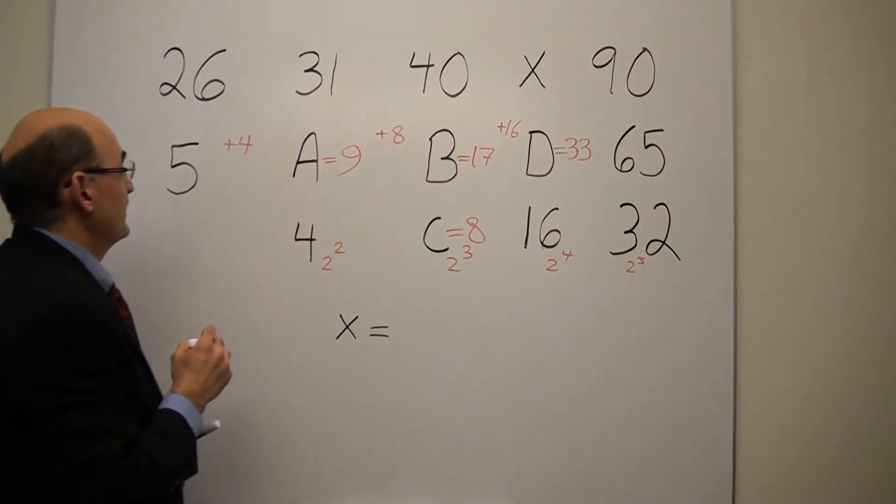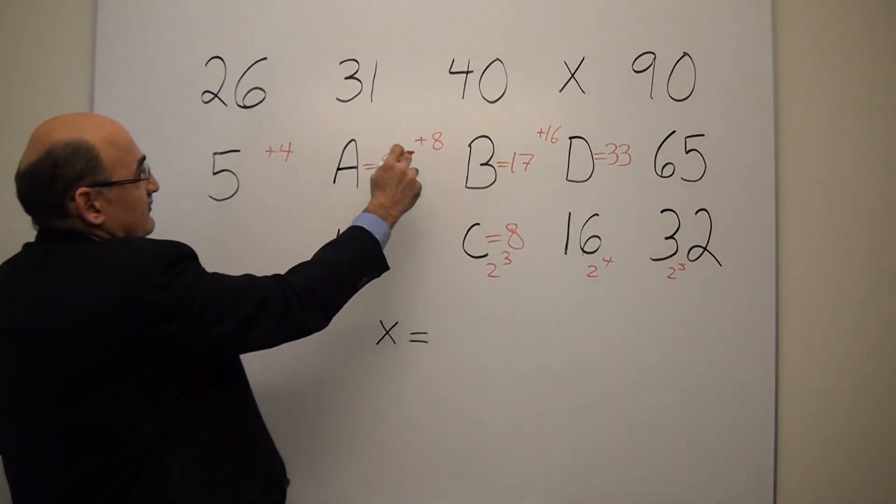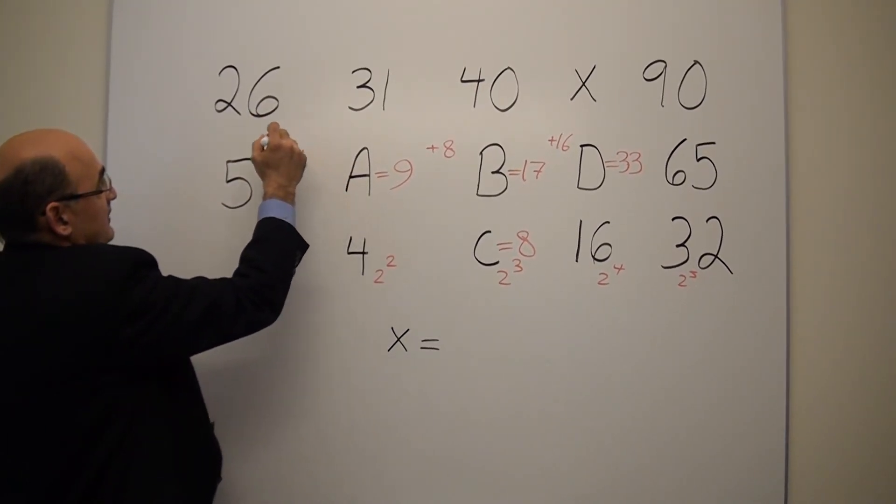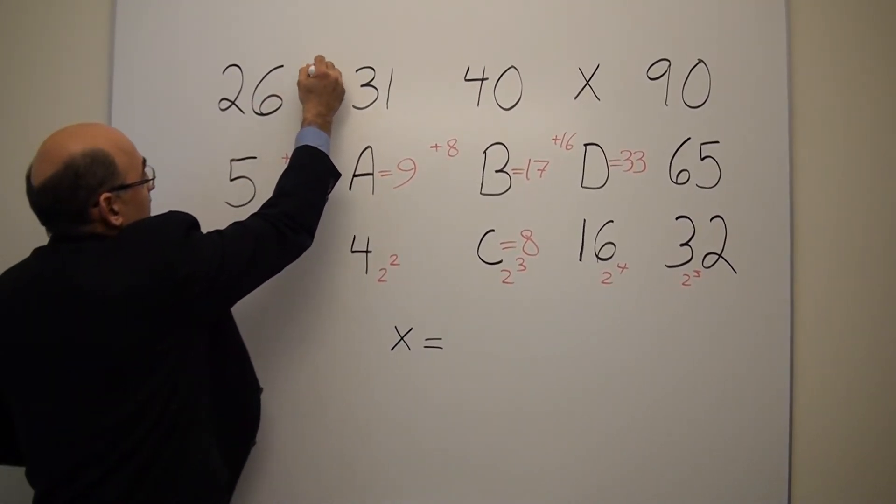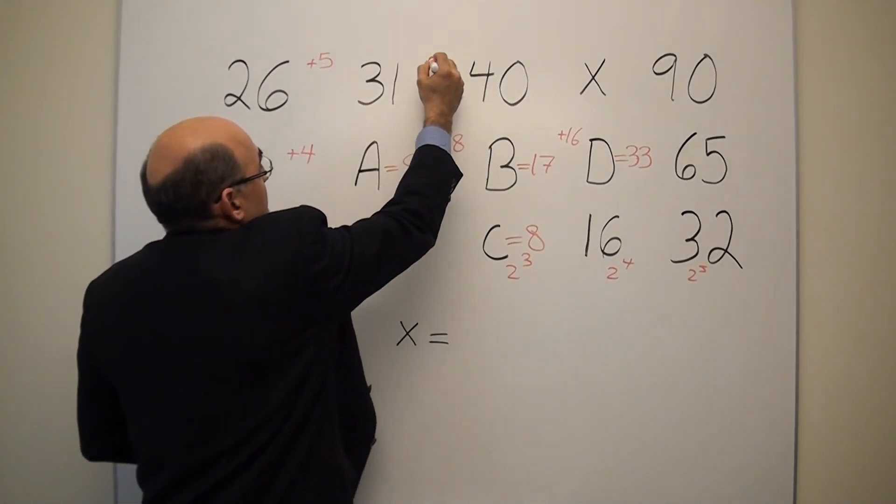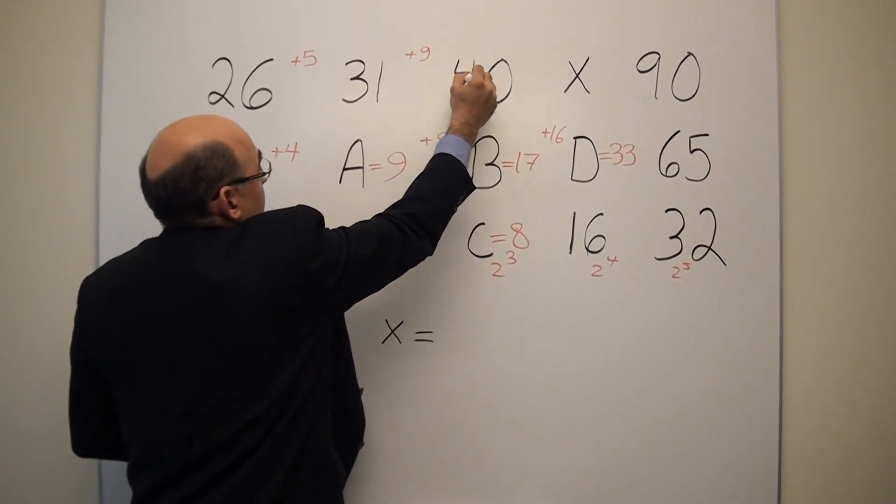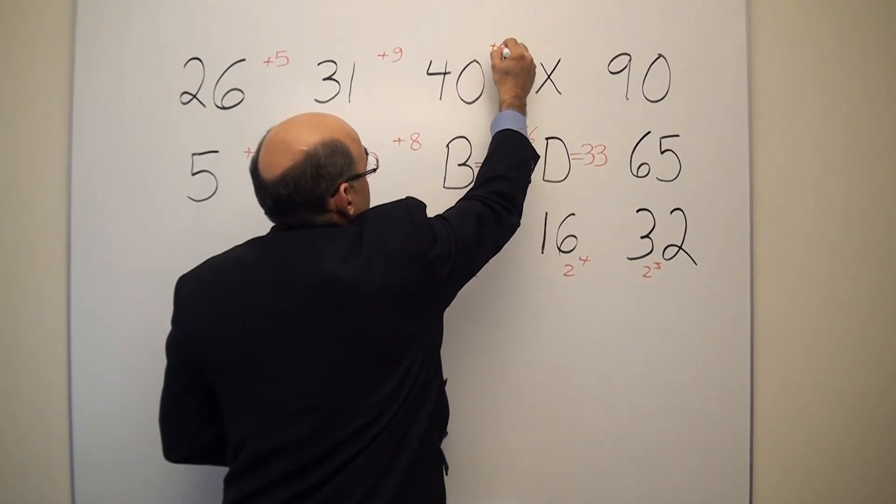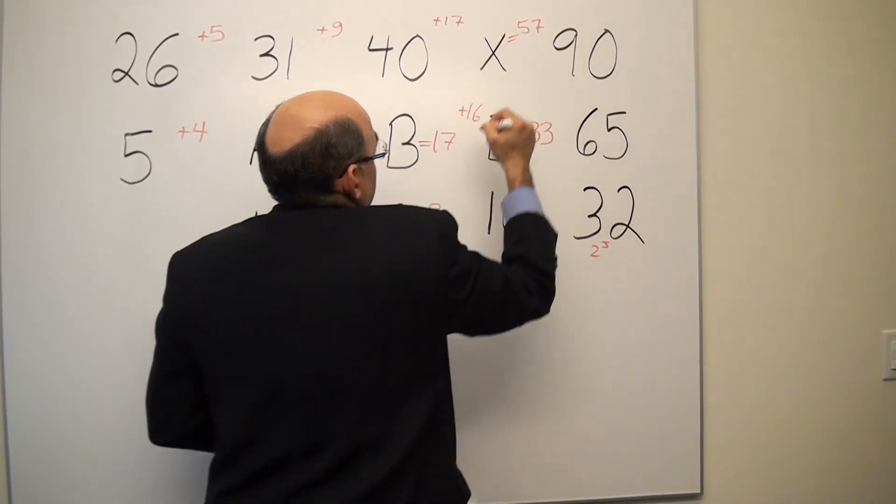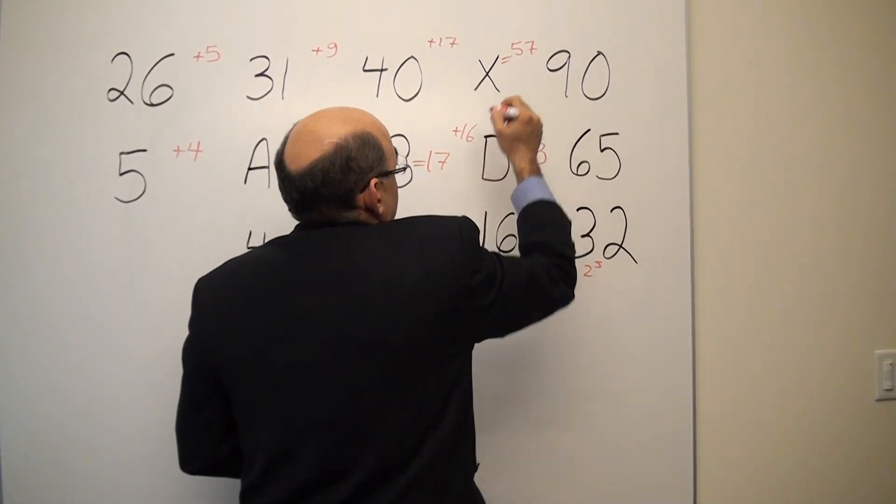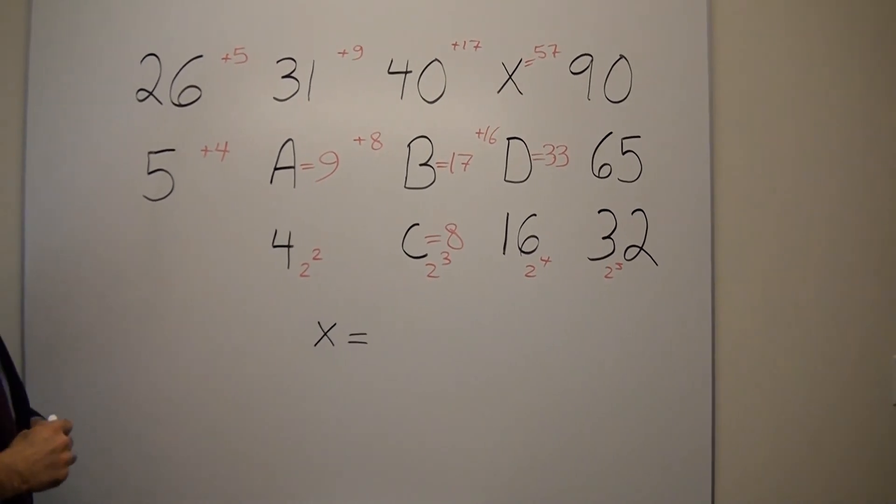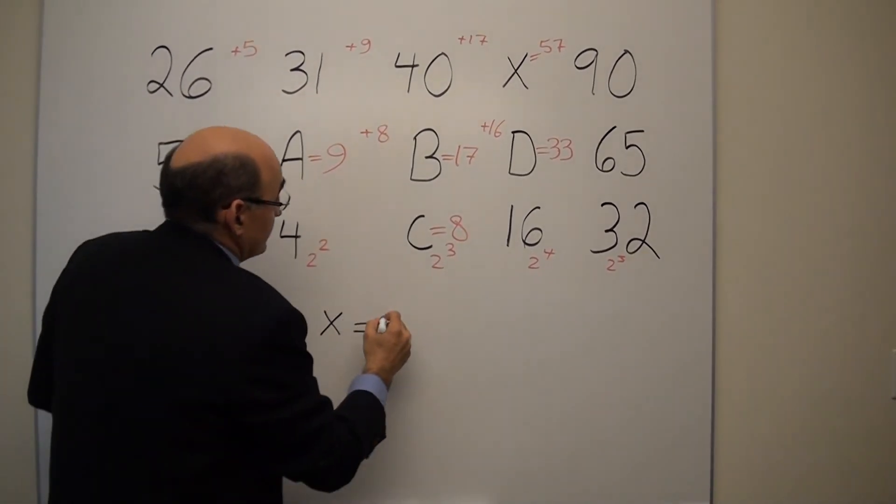Now you use this sequence to reach x. And to check the sequence, you have 26 plus 5, you get 31. 31 plus 9, you get 40. 40 plus 17, you get 57. And to check that, you add 33 to 57, you get 90. The correct answer is x equals 57.